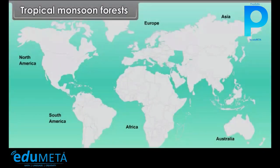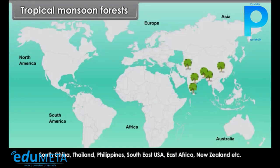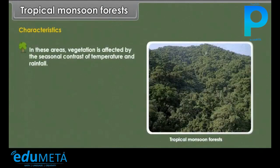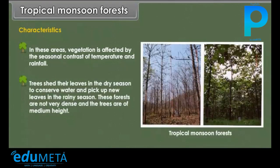Tropical Monsoon Forests are found in India, Pakistan, Sri Lanka, Bangladesh, Myanmar, South China, Thailand, the Philippines, Southeast USA, East Africa, New Zealand and other regions. In these areas, vegetation is affected by the seasonal contrast of temperature and rainfall. Trees shed their leaves in the dry season to conserve water and pick up new leaves in the rainy season. These forests are not very dense and the trees are of medium height.